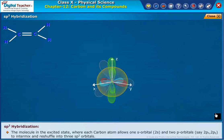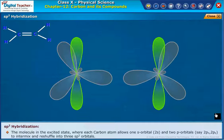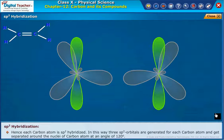The molecule in the excited state where each carbon atom allows one S orbital, 2s and two P orbitals, 2px and 2py, to intermix and reshuffle into three SP2 orbitals. Hence, each carbon atom is SP2 hybridized. In this way, three SP2 orbitals are generated for each carbon atom and get separated around the nuclei of carbon atom at an angle of 120 degrees.